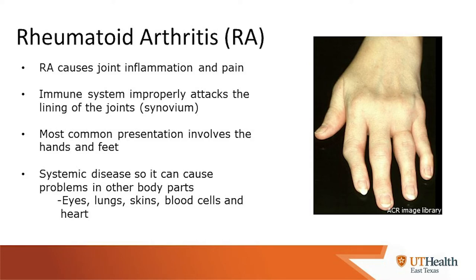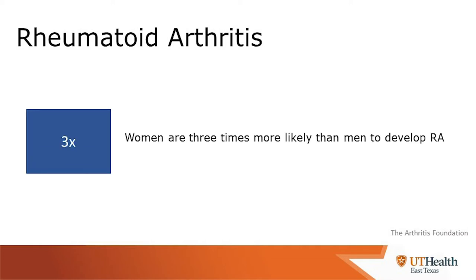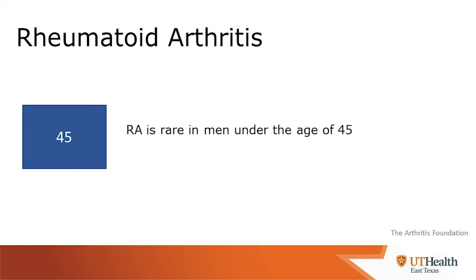Here you see a picture of a patient with rheumatoid arthritis showing substantial swelling over the different joints. Rheumatoid arthritis affects 1.5 million patients across the U.S. Women are three times more likely to develop it than men. In women, it commonly occurs between the ages of 30 to 60. In men, it's rare underneath the age of 45, however it can occur.